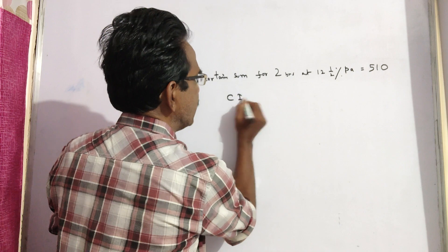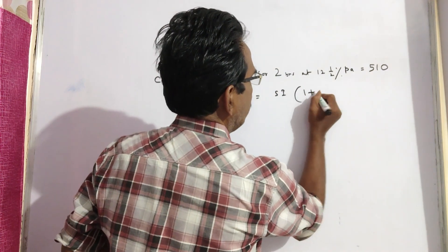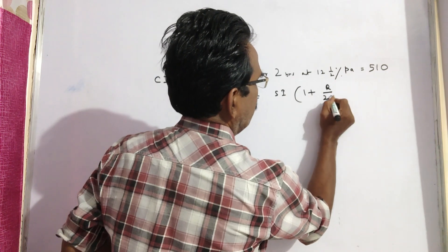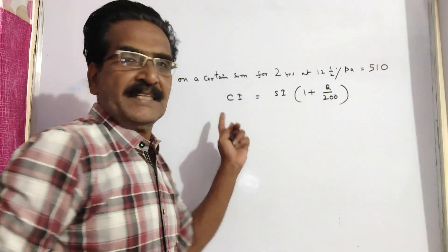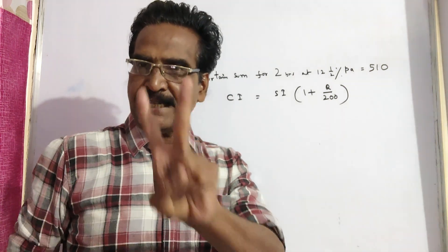CI is equal to SI into 1 plus R by 200. The relation between CI and SI for 2 years, only for 2 years friends,